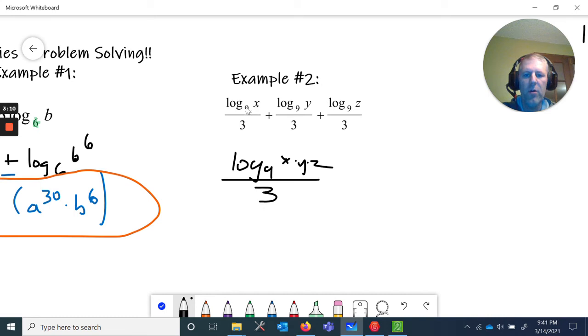And so since these are added together, we can condense that by multiplying. And so that's x times y times z.